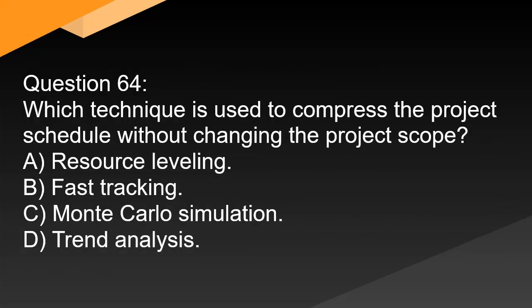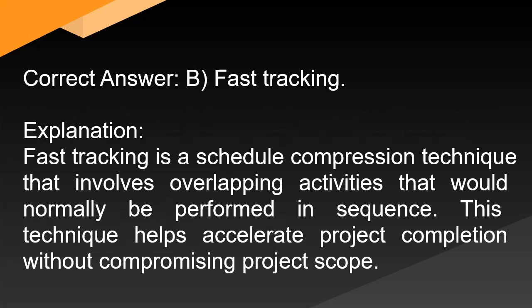Question 64: Which technique is used to compress the project schedule without changing the project scope? A. Resource leveling. B. Fast tracking. C. Monte Carlo simulation. D. Trend analysis. Correct answer: B. Fast tracking. Explanation: Fast tracking is a schedule compression technique that involves overlapping activities that would normally be performed in sequence. This technique helps accelerate project completion without compromising project scope.